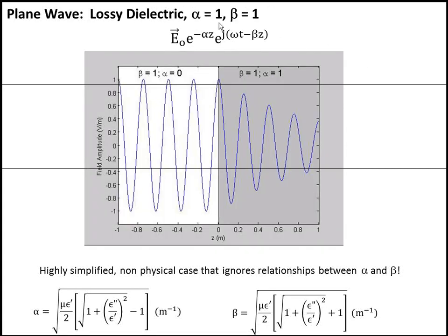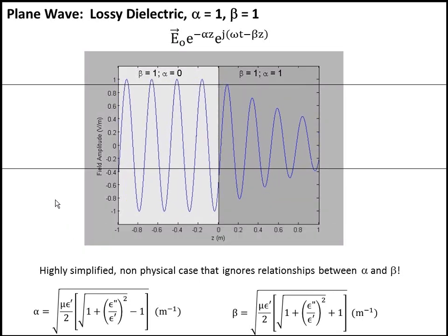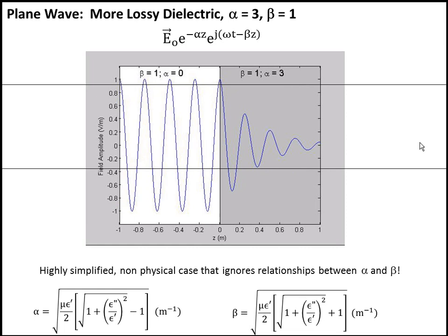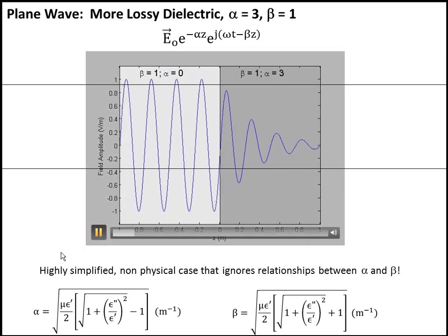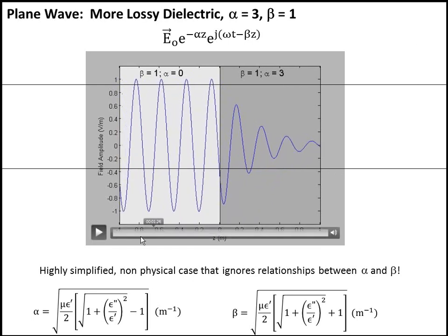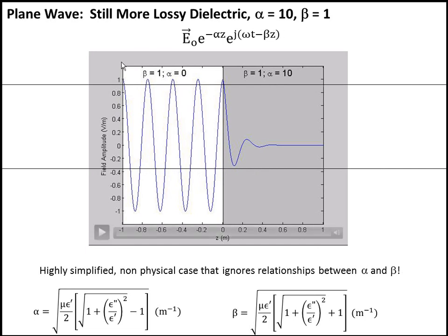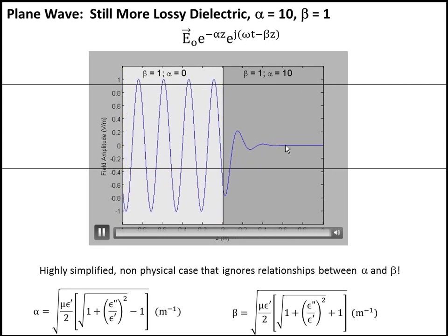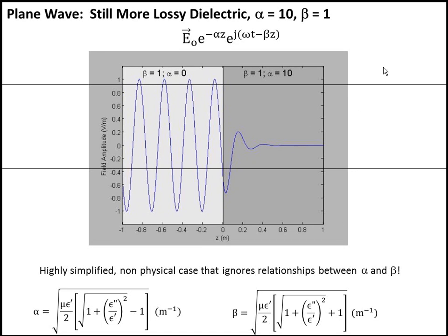Now let's move into a material with loss. Setting alpha equal to 1 and beta equal to 1, the wave comes in and decays exponentially away from the surface. Increasing to alpha equal to 3 with beta equal to 1, the decay is much stronger while the phase velocity is unchanged — the wave propagates at the same speed on both sides since beta is the same. With alpha equal to 10 — essentially a very lossy dielectric — the wave decays very rapidly away from the surface, and just a short distance in there's no field left because all the energy went into moving those charges.